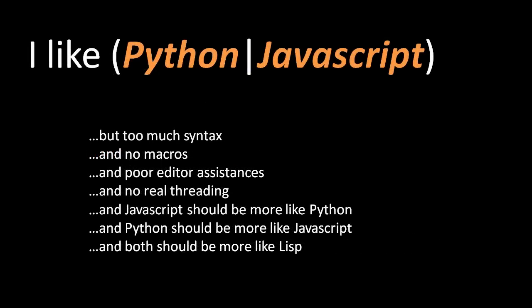So what do programmers get when they come from Python and JavaScript — what about Python and JavaScript actually needs to be fixed? Well, the first thing is that Python and JavaScript simply have too much syntax, they don't have proper macro support, and they don't have decent editor assistances like automatic name refactoring. And Python and JavaScript don't have decent support for threading — in fact, Python doesn't have real support for threading at all. Broadly speaking, there are aspects of JavaScript that should be more like Python, aspects of Python that should be more like JavaScript, and in both cases there are aspects where they should both be more like Lisp — for example, both should have Lisp-like macros and allow for the control flow style found in functional dialects of Lisp like Clojure.